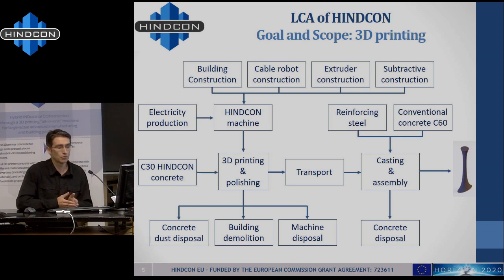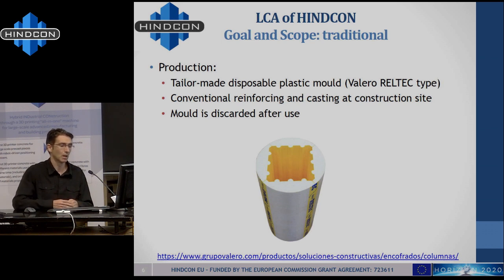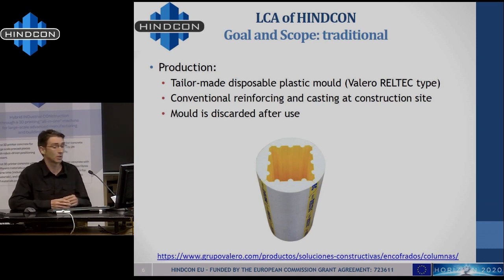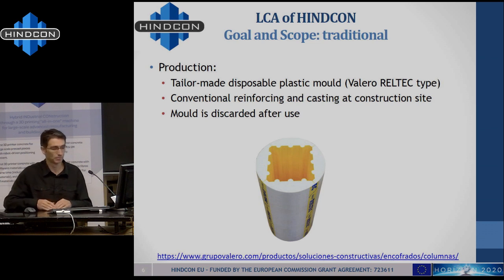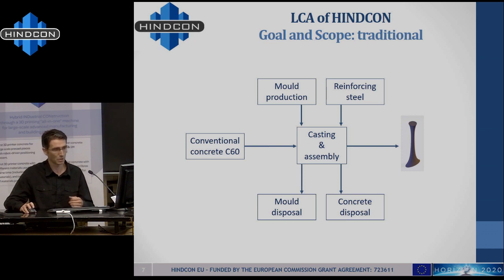We also need to compare this with a traditionally produced pillar that is equivalent in shape and in looks. Here we consider that we can produce the same pillar with a tailor-made disposable plastic mould, such as the ones offered by the Spanish company Valero — you can produce these moulds for the shapes that you want. Then we would just cast the pillar, and the mould is discarded, becoming waste. For this case the diagram is much simpler: we need the concrete, the mould, and the reinforcing steel; we cast, and then we dispose of the mould and any concrete losses.